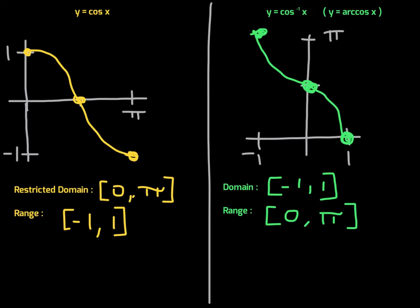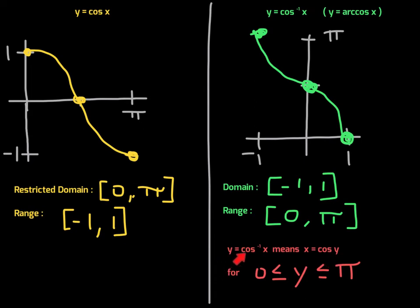Y equals inverse cosine of x means that x equals cosine of y — that is, y is the angle whose cosine is x. It is really important that y can only be between zero and pi. When thinking about the unit circle, if y is between zero and pi, that means y is coming from quadrant one or quadrant two.